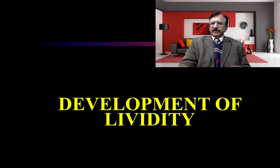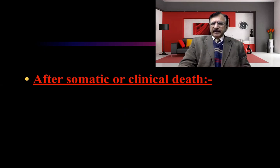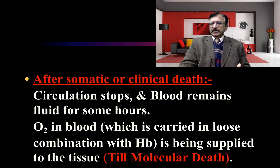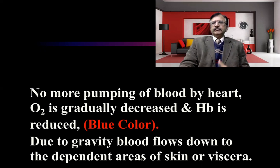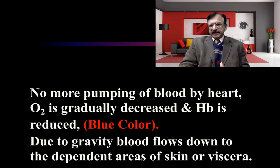Now the development of lividity — how it progresses and why it develops. After somatic or clinical death, circulation stops and blood remains in fluid form for some hours. The oxygen carried in loose combination with hemoglobin is supplied to the tissues until molecular death. When the heart is no longer pumping blood, oxygen gradually decreases and hemoglobin becomes reduced, turning blue in color. Then, due to gravity, this blood flows down to the dependent areas of the skin and internal viscera.